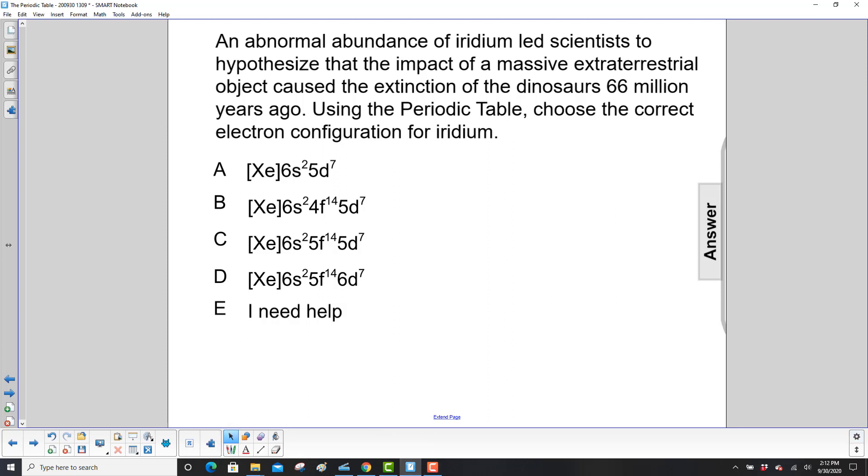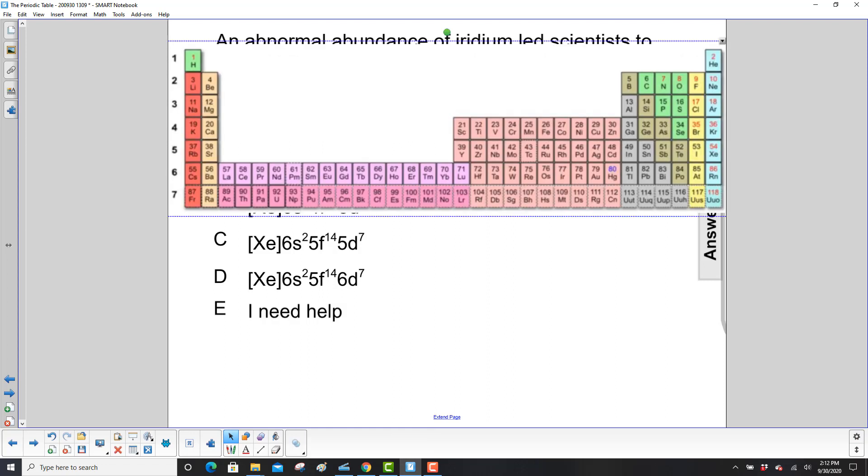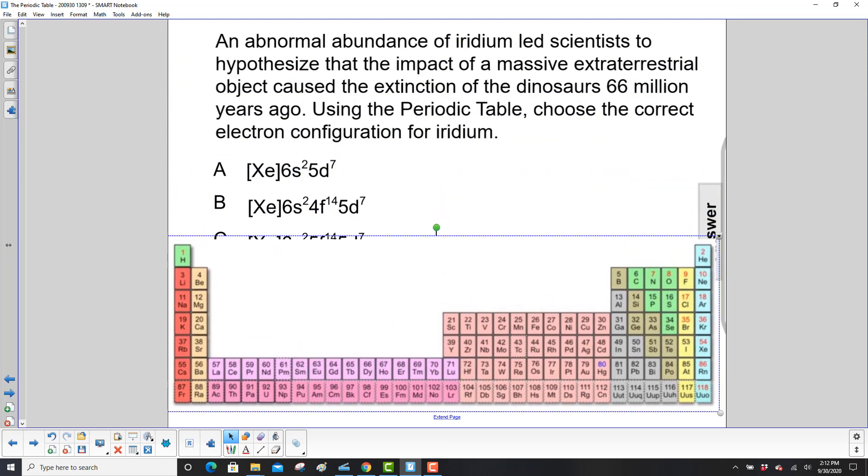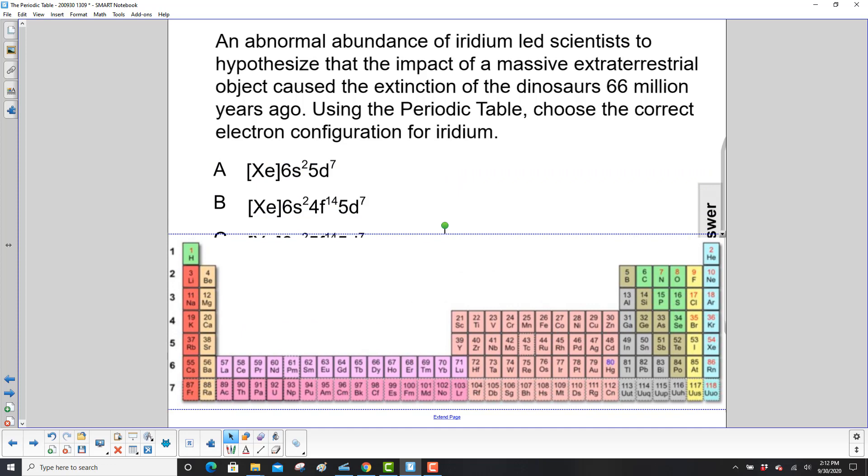Well, we have to first pull up a periodic table. Here we go. Let's first find iridium. So iridium is over here.